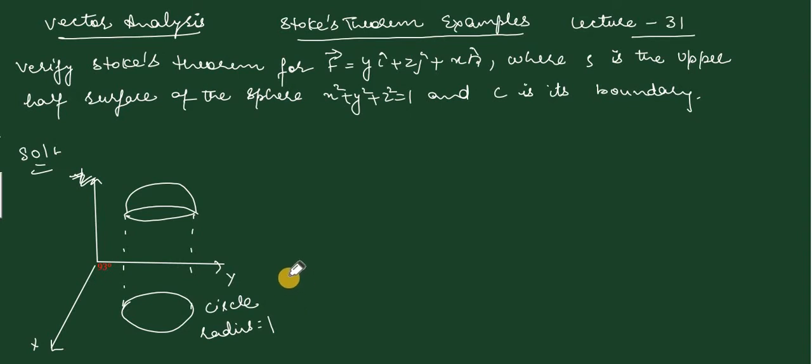Good morning students! We are going to do the next example. Verify Stokes theorem for f vector equals to this where s is the upper half surface of the sphere x square plus y square plus z square equals to 1 and c is its boundary.